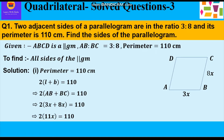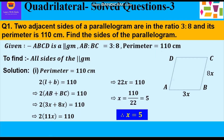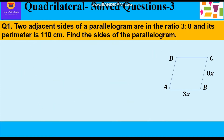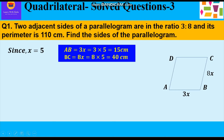Further, 3x + 8x = 11x, and 11x × 2 = 22x = 110. So x = 110 ÷ 22 = 5. The value of x is 5. Since x = 5, we can find the length of AB and BC. AB = 3x = 3 × 5 = 15 cm, and BC = 8x = 8 × 5 = 40 cm.